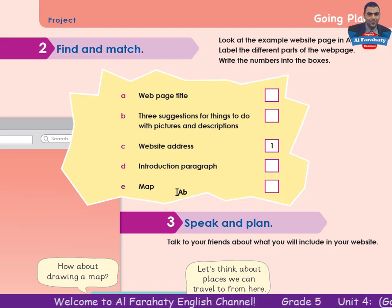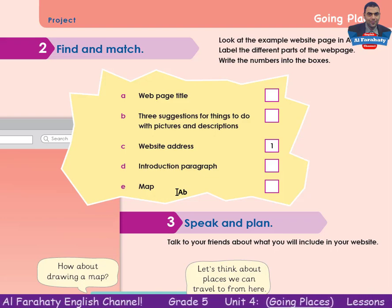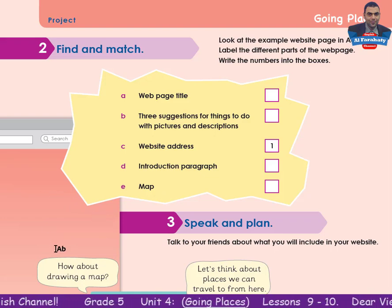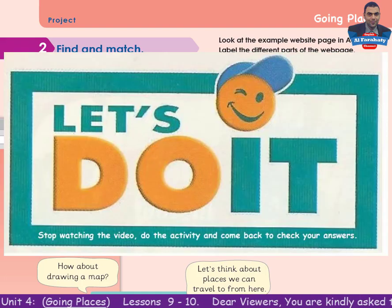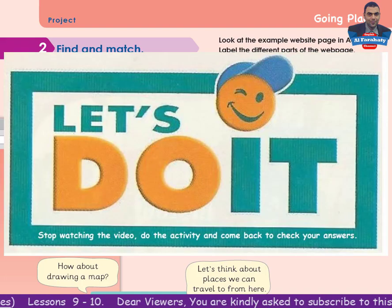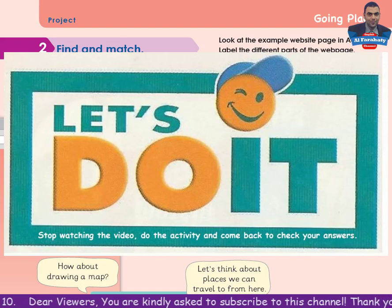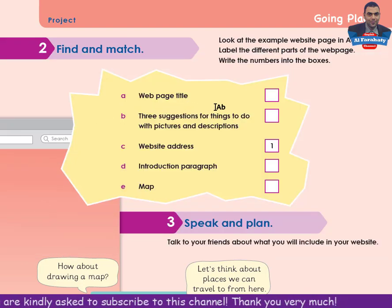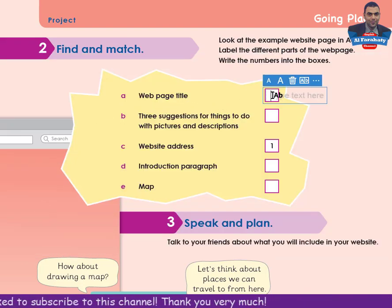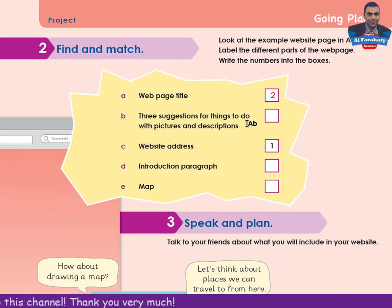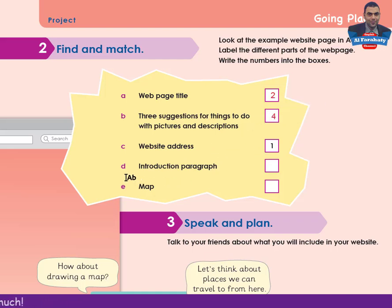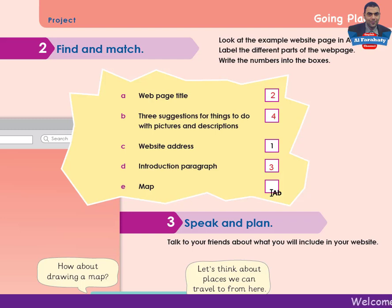Use your pencil to do the task, then come back to check your answers. Hello again — the answers: web page title is number 2, three suggestions for things to do with pictures and descriptions is number 4, number 1 (website address) is done for you, introduction paragraph is number 3, and map is number 5.